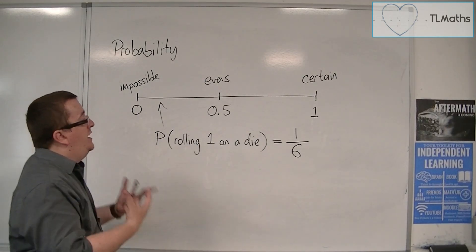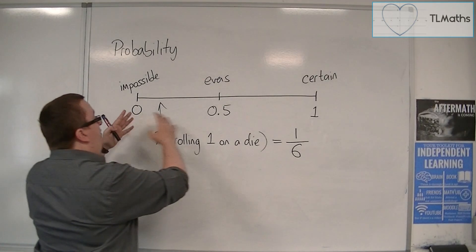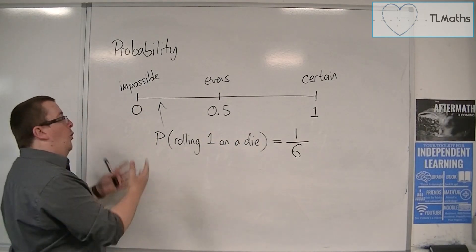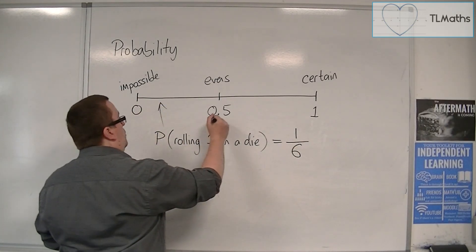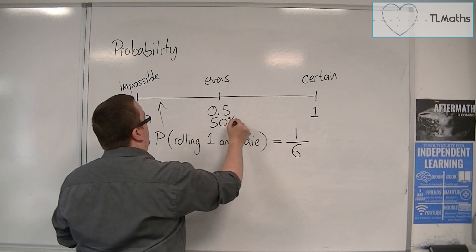So, probabilities can be given as decimal answers, or they can be given as fractions, or we could give them as percentages.